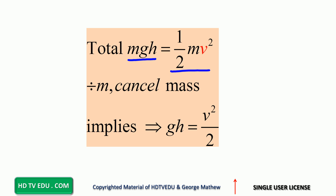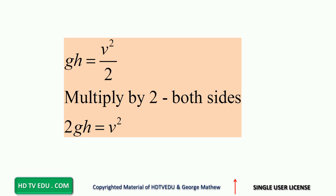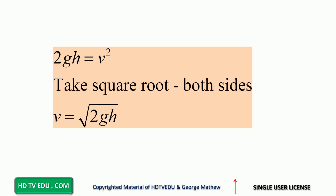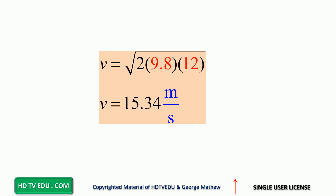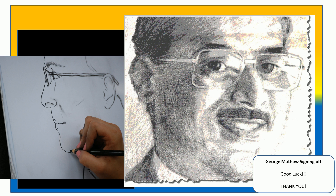After canceling mass: gh equals v squared over two. Multiply both sides by two: 2gh equals v squared. Take the square root of both sides: v equals the square root of 2gh. With g equals 9.8 and h equals 12, substitute and take the square root to get v equals 15.34 meters per second. This is George Matthew signing off — good luck.